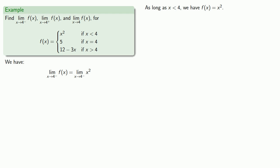So the limit as x approaches 4 from below of f of x is going to be the same as the limit as x approaches 4 from below of x squared, which will be 16.